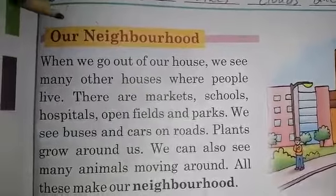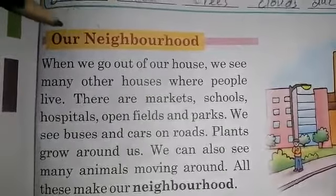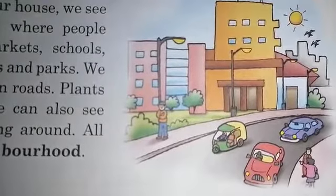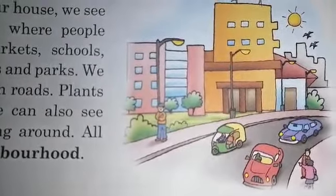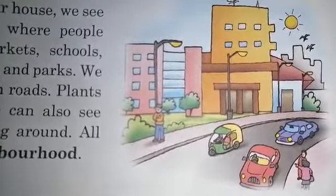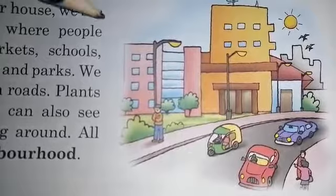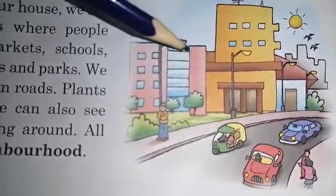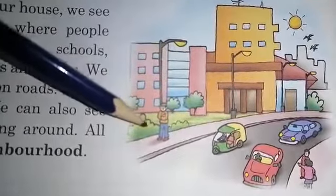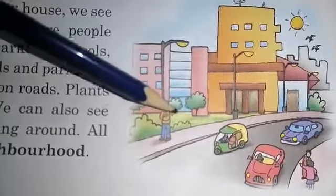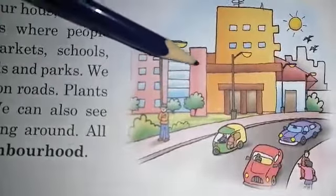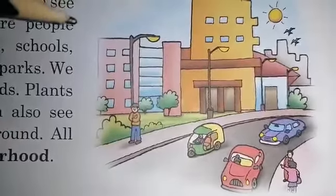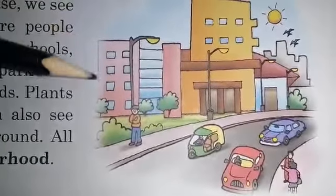Firstly, we will discuss our neighborhood. When we go out of our house, we see many other houses. As you can see, there are many houses here where people can live. There are markets, schools, hospitals, open fields and parks.